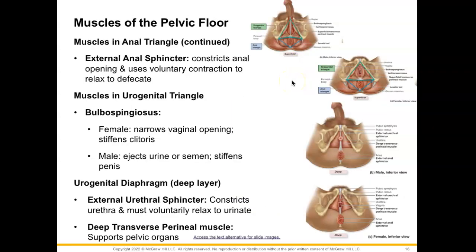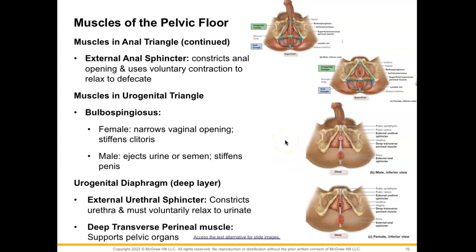Continuing with muscles in the anal triangle, we also have the external anal sphincter. This constricts the anal opening, and we use voluntary contraction in order to relax this muscle and defecate.